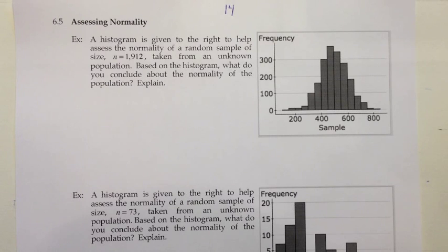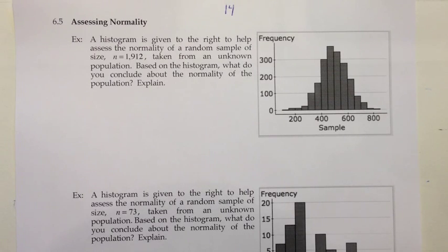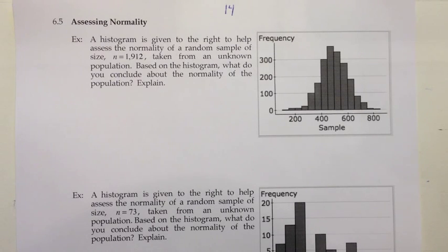We're going to do that by looking at the sample and from the sample try to gain clues to see what we can decide. Our first method of making the decision about whether our population is normal or not is going to be to look at a histogram. If the histogram is roughly bell-shaped, then we'll be able to conclude that there's a reasonable possibility that the sample was taken from a normal population. But if the histogram is not at least roughly bell-shaped, then we would conclude the sample did not come from a normal population.